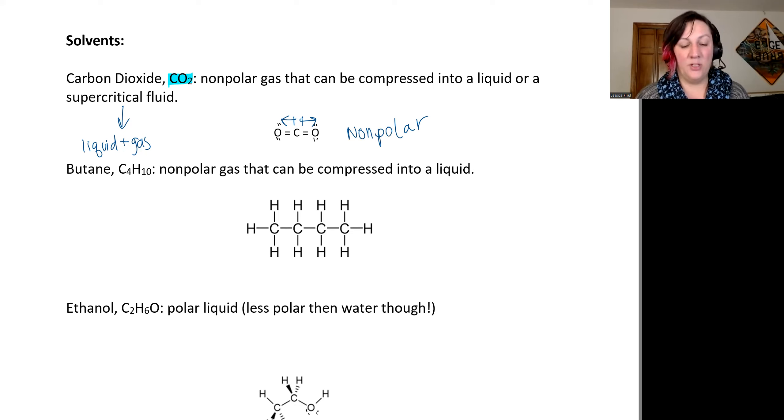And then we have butane, which is C4H10. It is also nonpolar. Hopefully that's easy to see because we have all carbon-carbon and carbon-hydrogen bonds, so all of our bonds are nonpolar. This is a small molecule, but not as small as carbon dioxide. It will be a gas at just ambient room temperature, but it is easily compressed into a liquid. It'll become a liquid at zero degrees Celsius or 32 degrees Fahrenheit. So it's very easy to switch between a gas and a liquid without having to do too much work to cool it down.